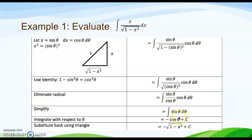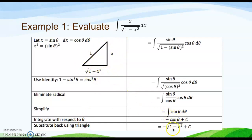Integrating sine theta gives negative cos theta plus C. Finally, back-substituting using the triangle, cos theta equals the square root of 1 minus x squared. Therefore, the answer is negative square root of 1 minus x squared plus C.